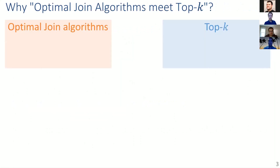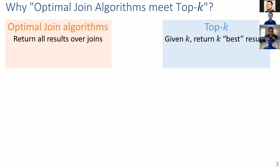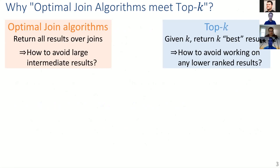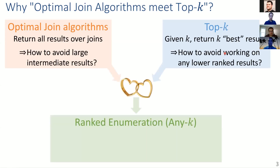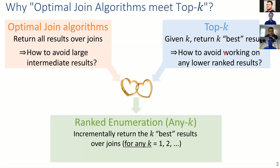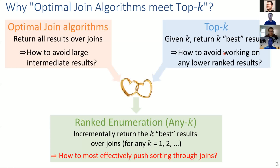Why this title? We observed that there are two areas that have been heavily investigated and share interesting commonalities and slight differences. In Optimal Join Algorithms, we want to return all results over joins. In Top K, we just want to return the best results. Common to both is avoiding unnecessary computations — either unnecessary large intermediate results or lower-ranked results. When these two topics come together, there's an interesting set of questions, something we call ranked enumeration, or "any K." The best of both worlds: incrementally return the best result first, then the next, and so on.